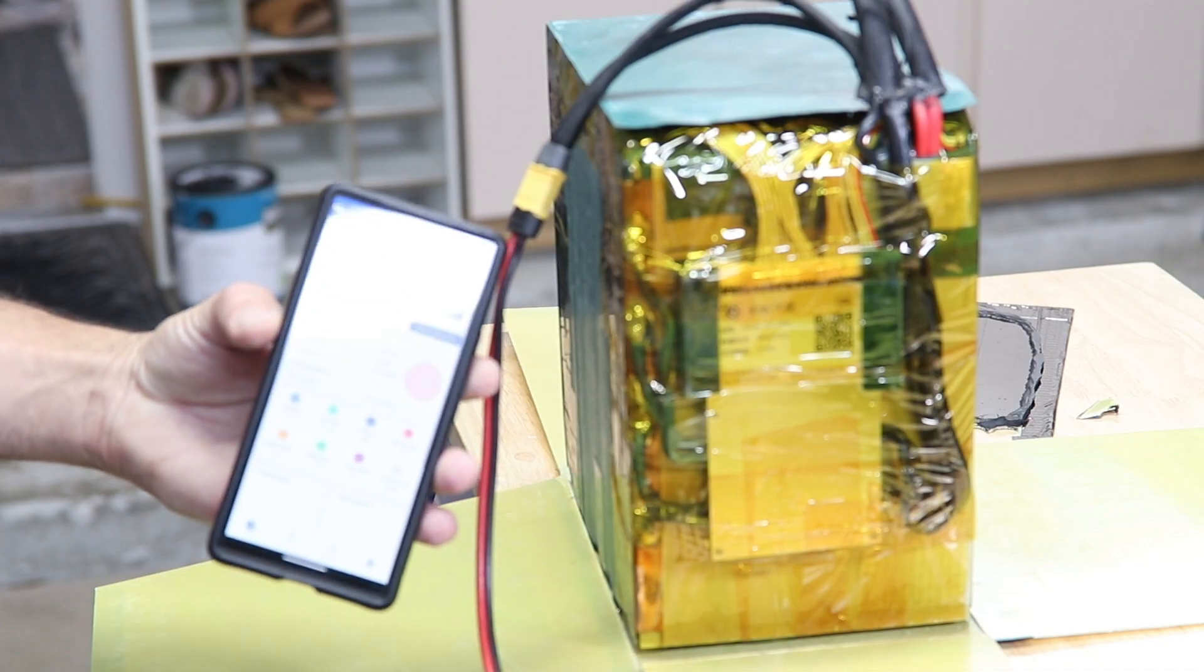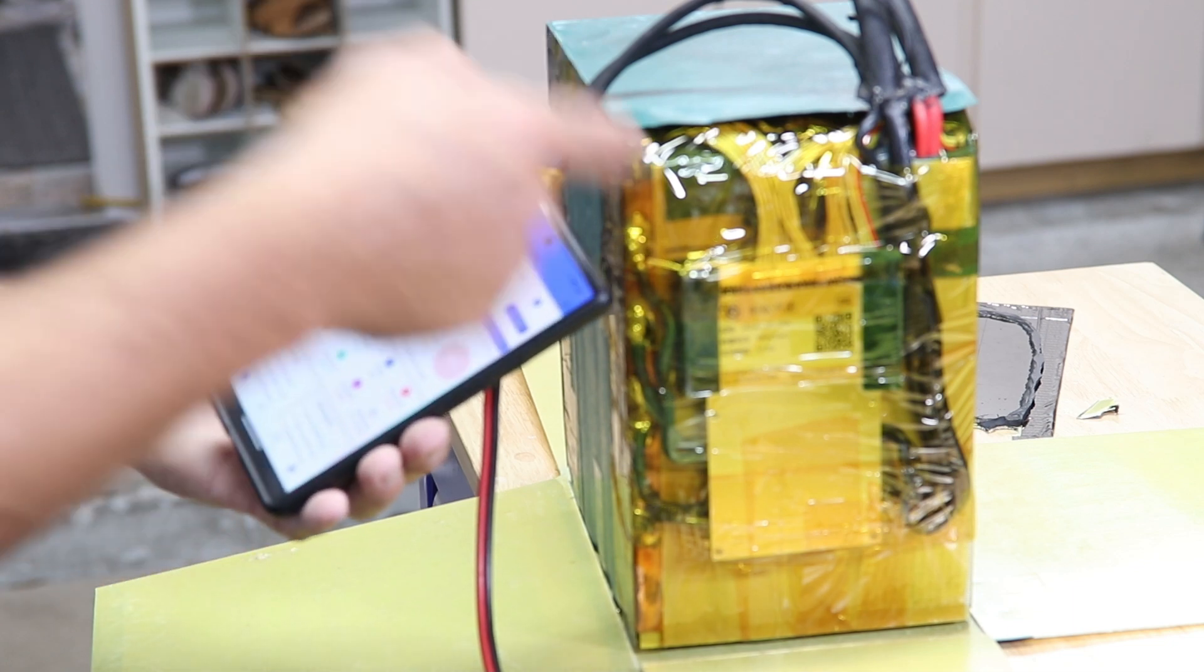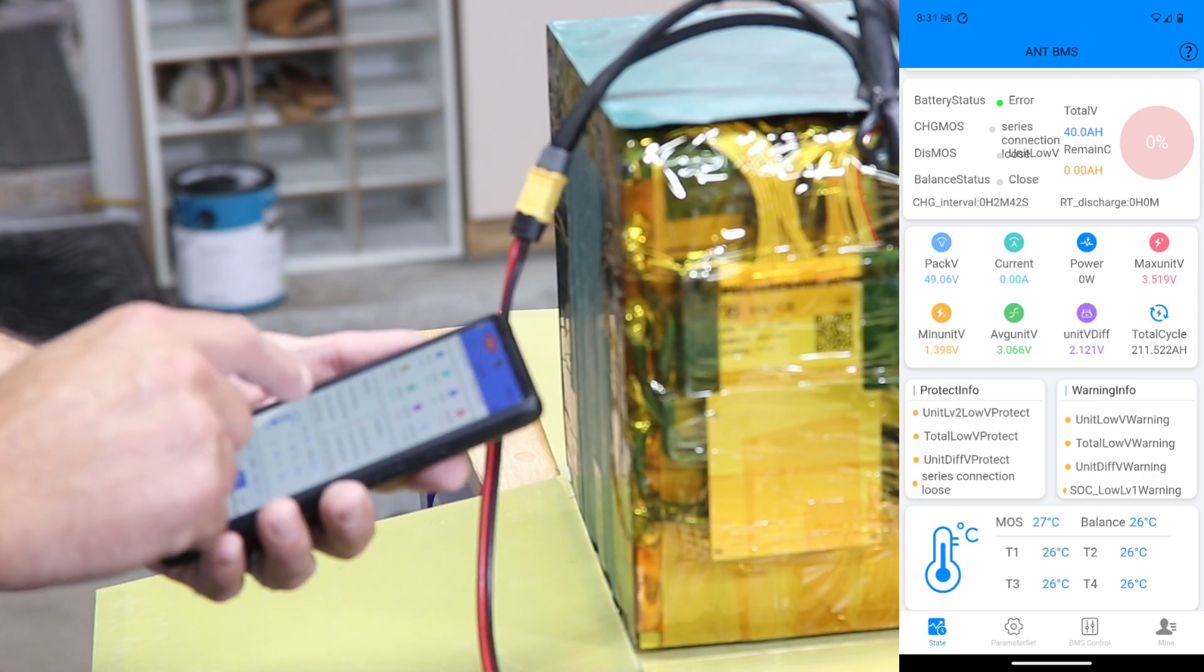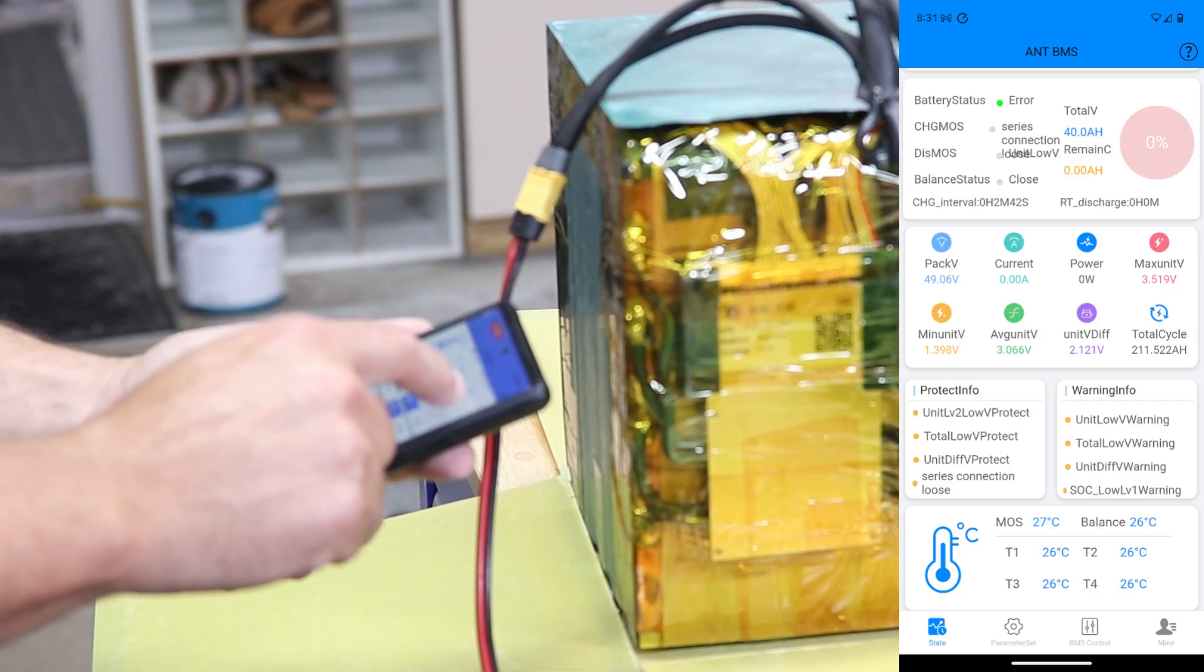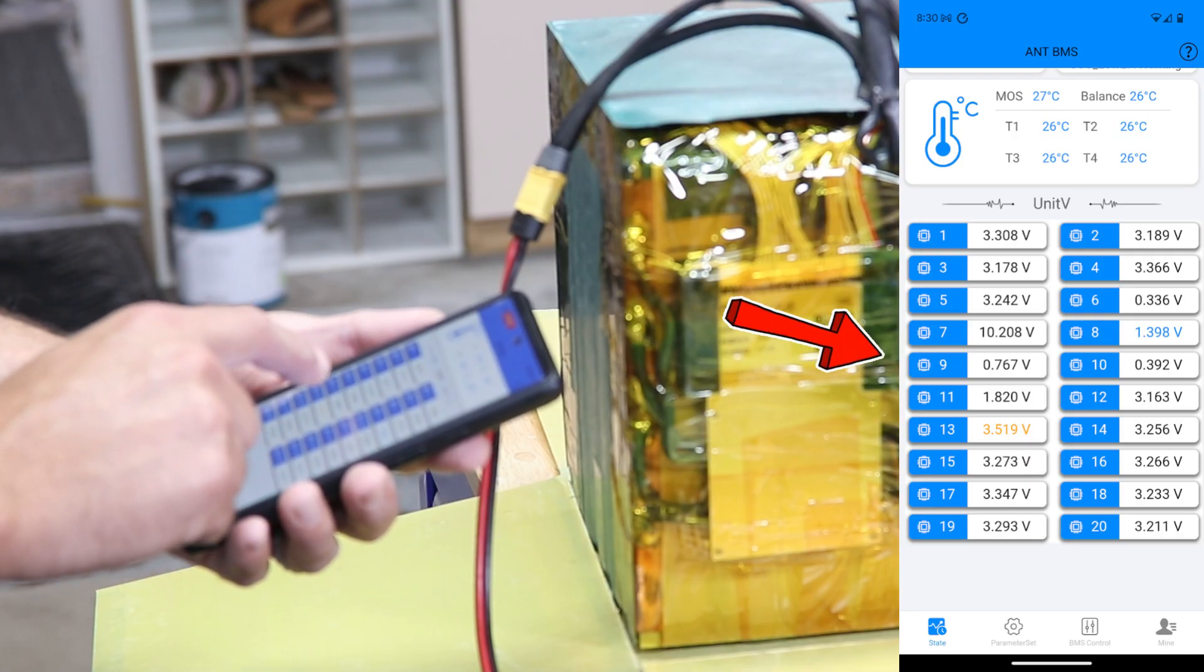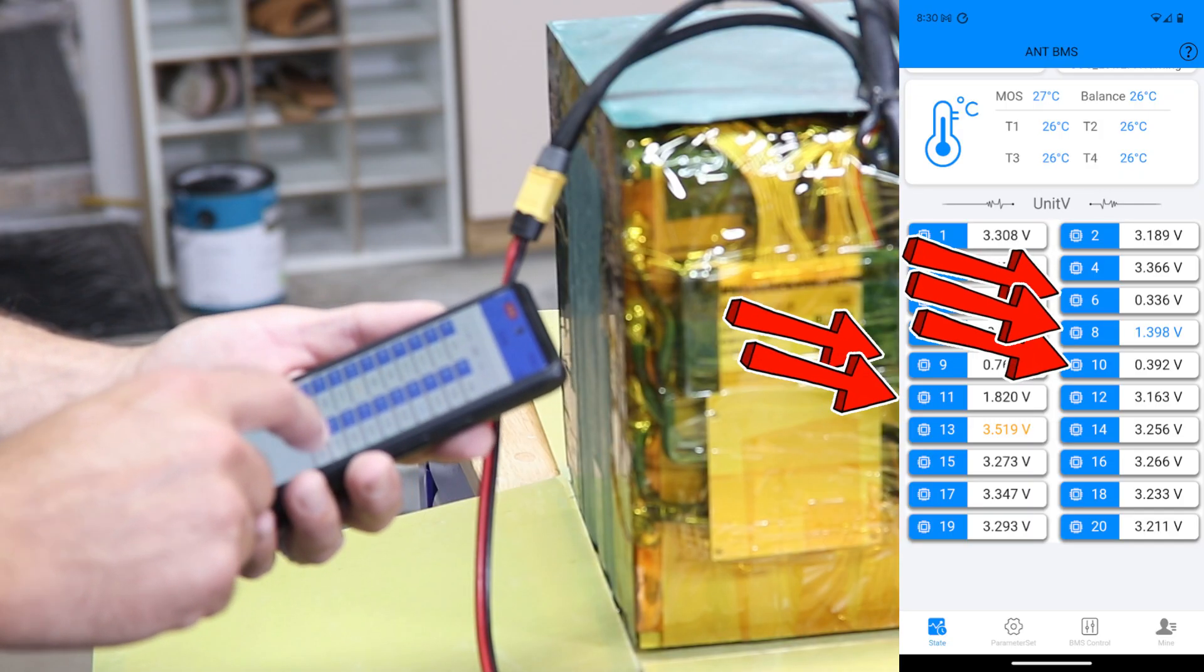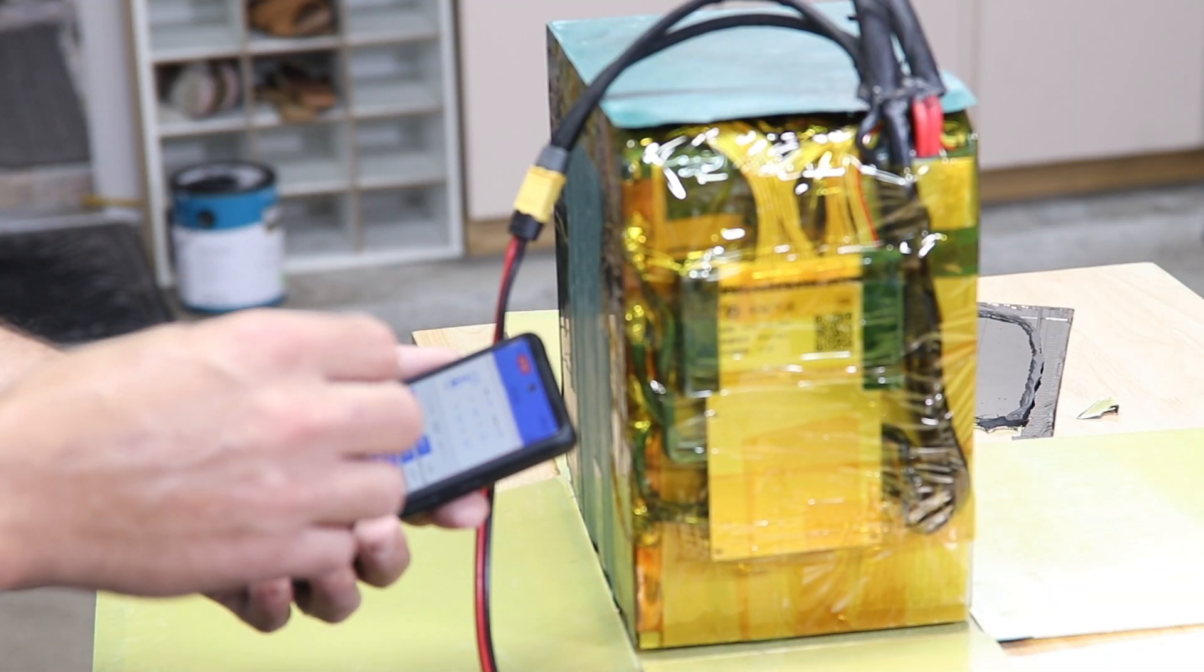And there is an Ant BMS app. We're going to go to the device list, we're going to select this BMS and it's going to load up just like this. So as we scroll through and see what's going on here, I can already see that we have protection info and warning info. We got a low voltage warning. And let's go down to our actual cells and we can see we actually have group nine, group eleven, group ten, group six, and group eight all under voltage.